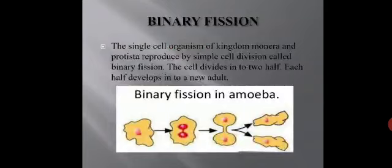In binary fission, 'bi' means two and 'fission' means split — so the organism splits into two organisms. As you can see in this diagram, a parent amoeba is splitting into two daughter amoebae. In this process, first the nucleus divides into two, and later the cytoplasm divides into two, forming two daughter amoebae. Binary fission generally occurs in amoeba and paramecium.